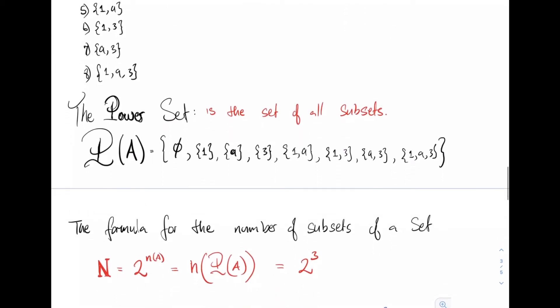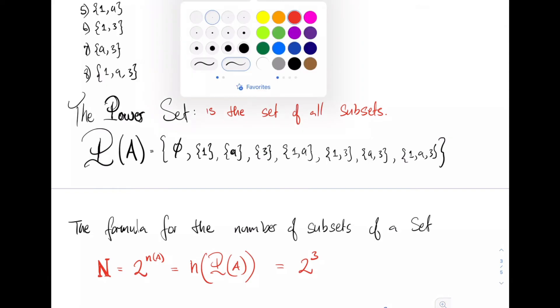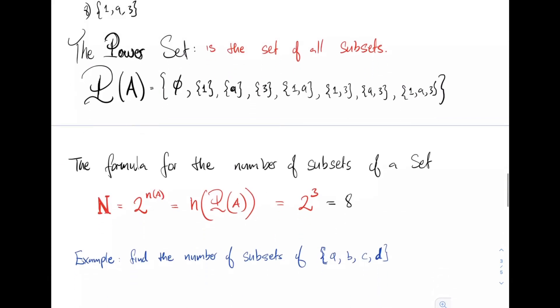The number of subsets is 2 raised to the power 3, and that's how we ended up with eight subsets. For the next example, the question asks us to find the number of subsets of set X. The number of subsets of X equals 2 raised to the number of elements in X, which equals 2 to the fourth power, which is 16. So there are 16 subsets associated with set X.